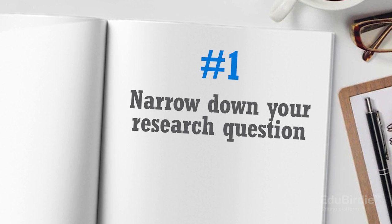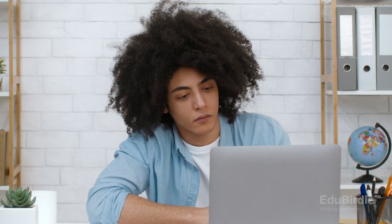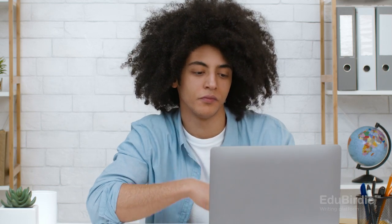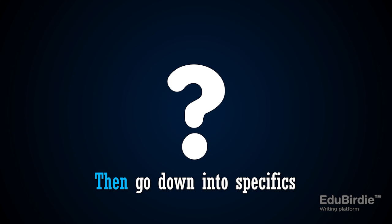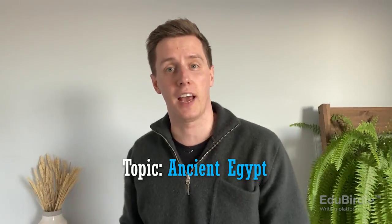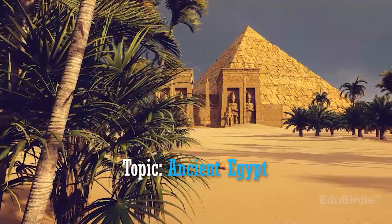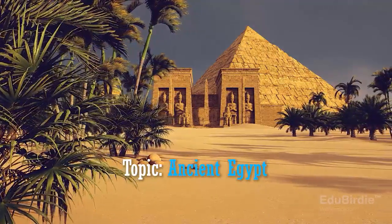Tip one: narrow down your research question. Trust me, the broader your question, the harder it's going to be for you to find resources. Not having a specific goal in mind will lead you down random rabbit holes and have you save hundreds of research papers, overwhelming you further. Start with a general question and go down into specifics. For example, if you're in an archaeology class reviewing existing literature on ancient Egypt, ancient Egypt is a very vague topic and you'll end up with a million resources. Instead, narrow it down to a specific time period or pharaoh and focus on that. The narrower you make it, the more manageable it'll be.